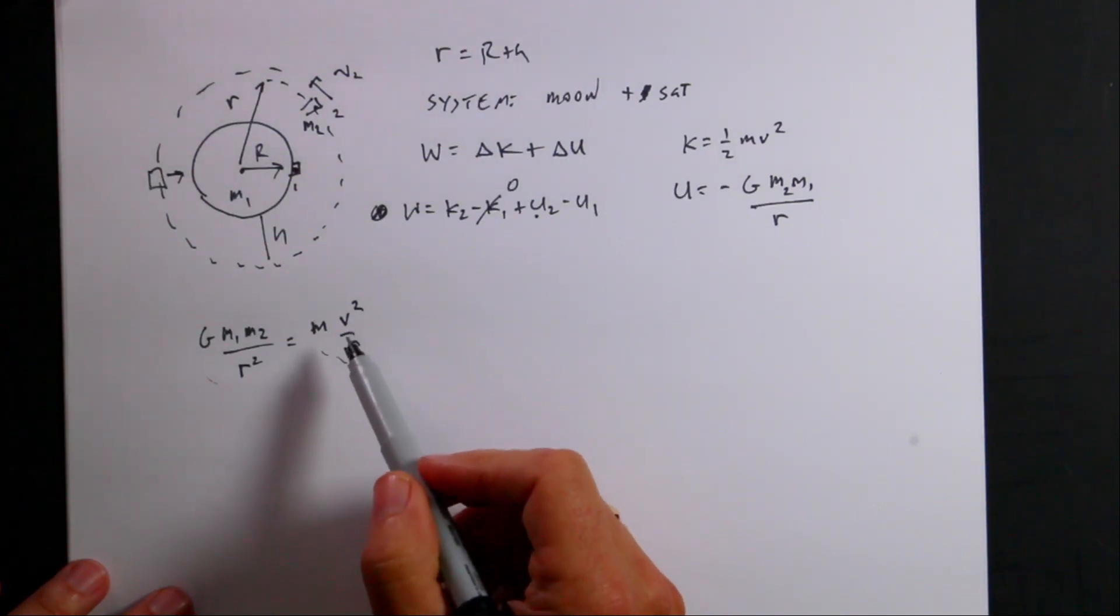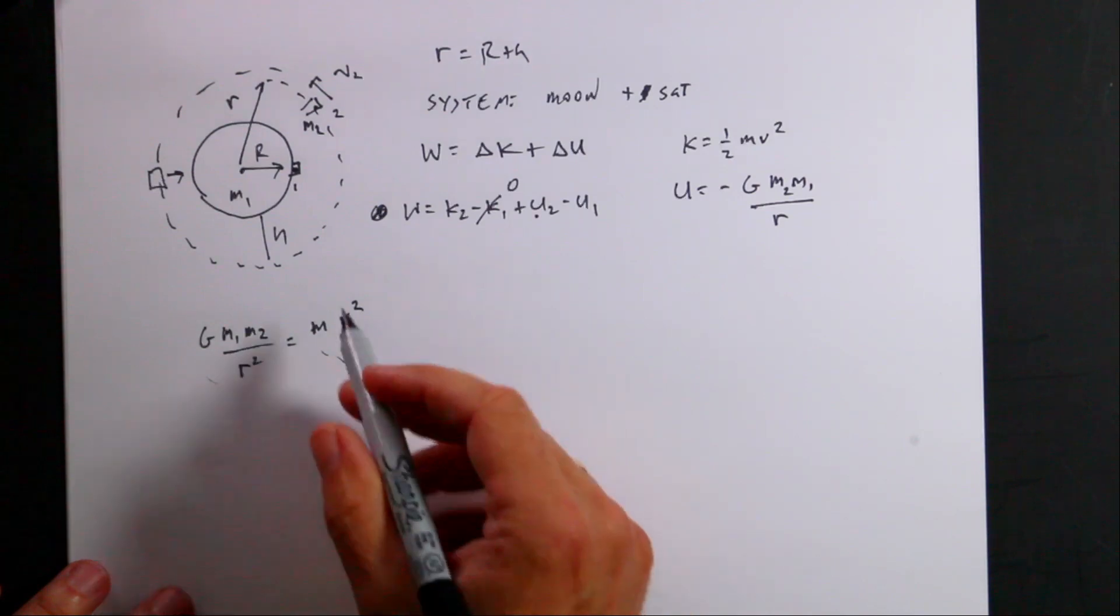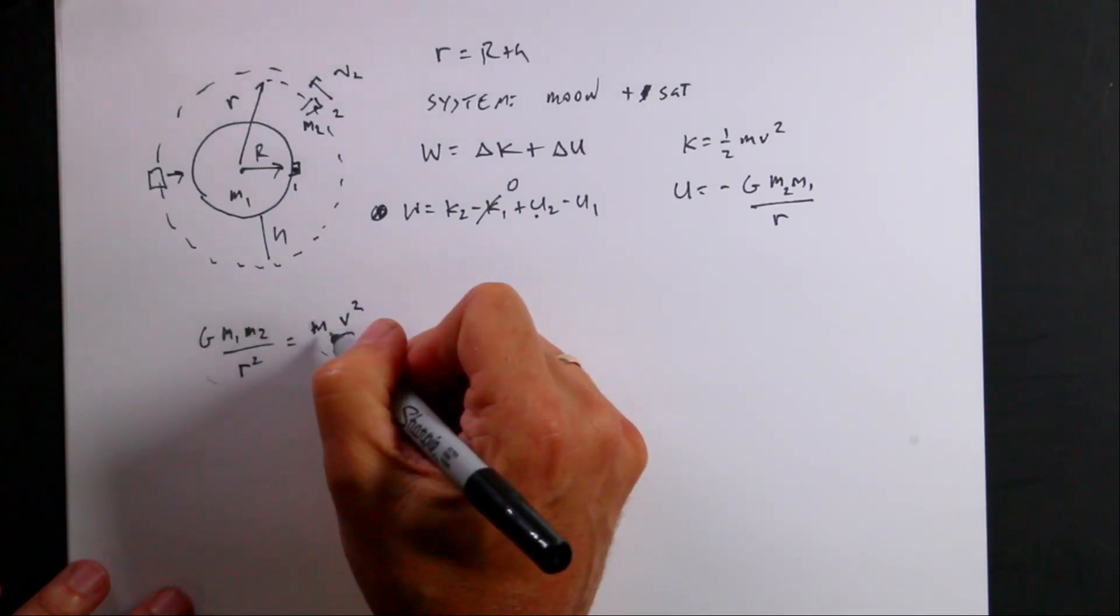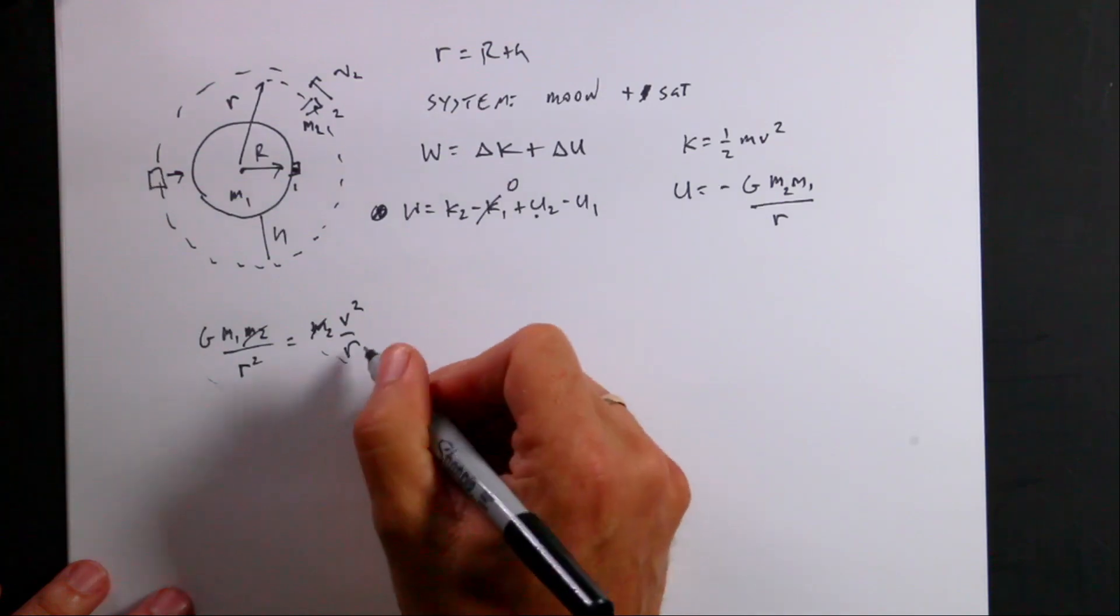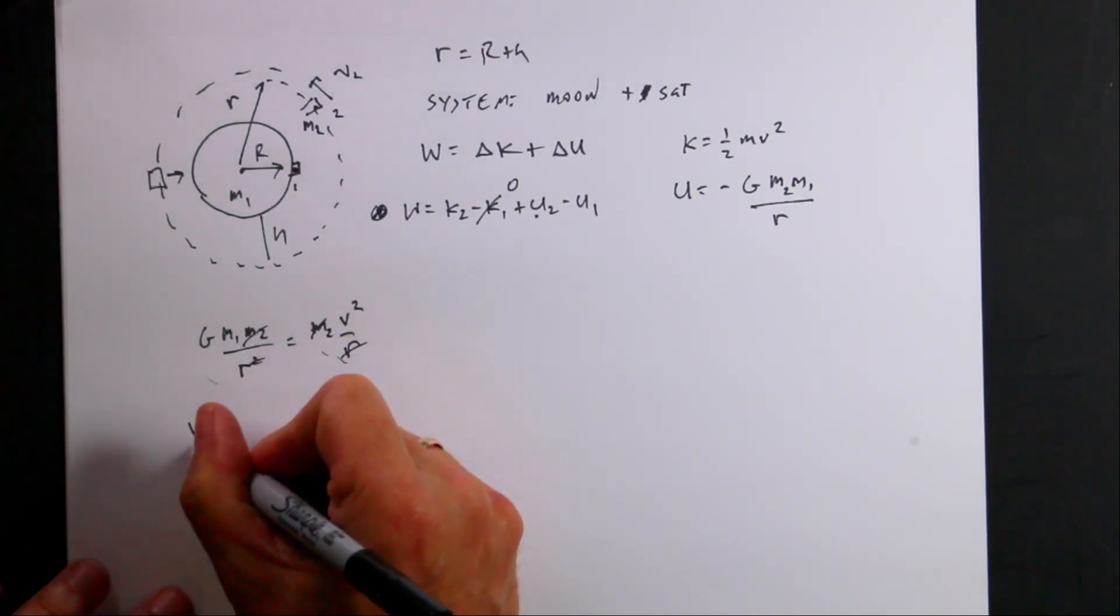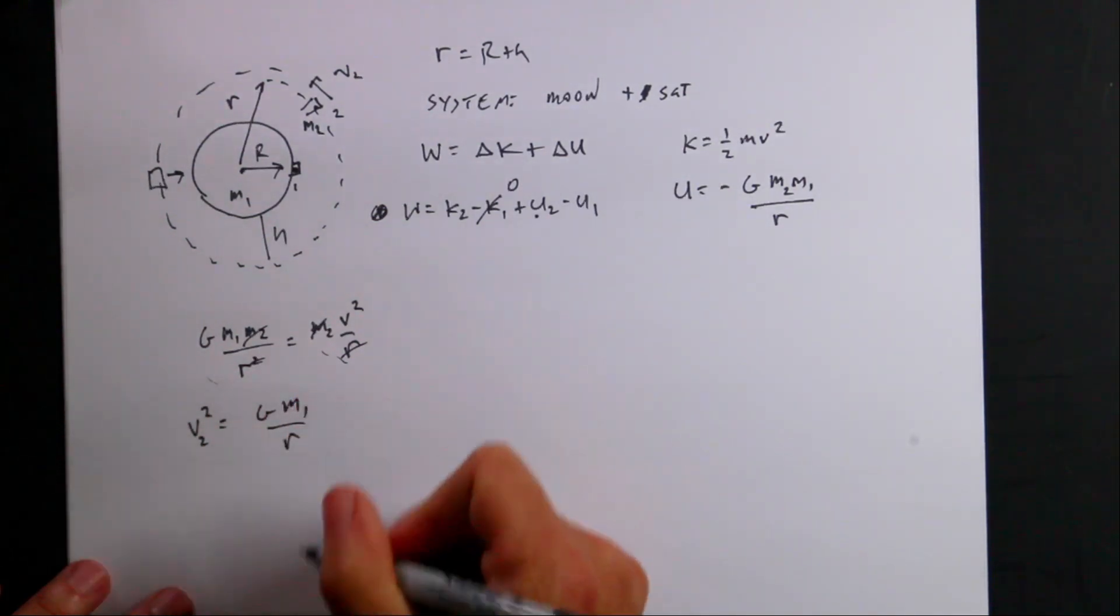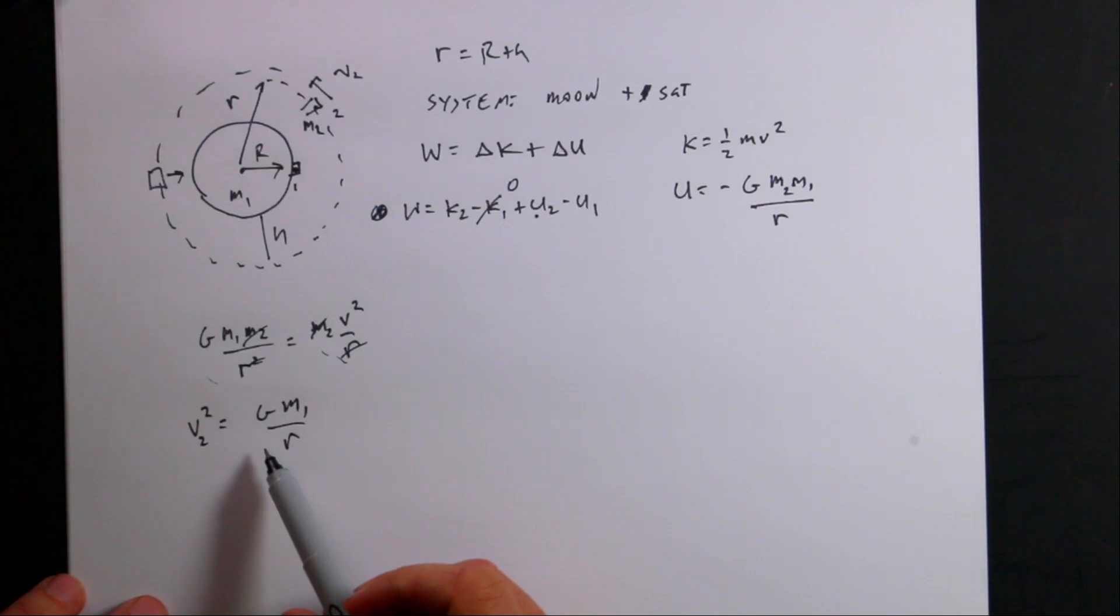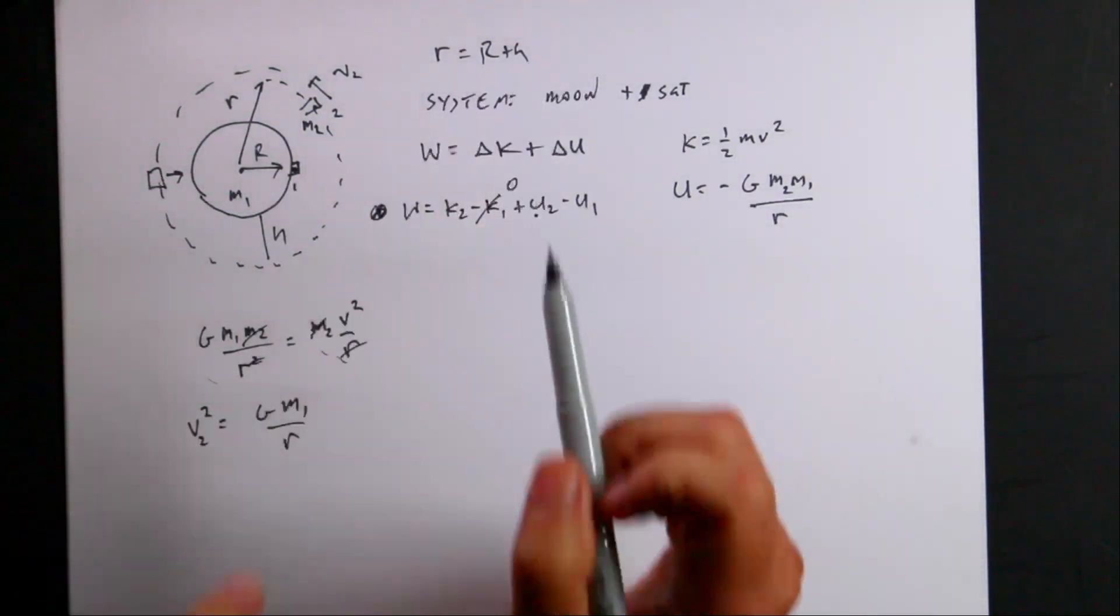And in fact, I don't even need the velocity. I'm going to solve for the velocity squared, because I don't need the velocity, right? Because the kinetic energy depends on the velocity squared. So, and this is actually m2, and the mass twos cancel. Multiply both sides by r, that cancels, and I get v2, this is v2 squared, is g m1 over r. That's the square of the velocity for being in orbit. And r is r plus h.